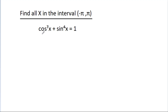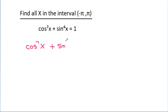We have given that cos⁷x plus sin⁴x is equal to 1. Then we have to find all x in the interval minus pi to 2pi. So, we have cos⁷x plus sin⁴x is equal to 1.